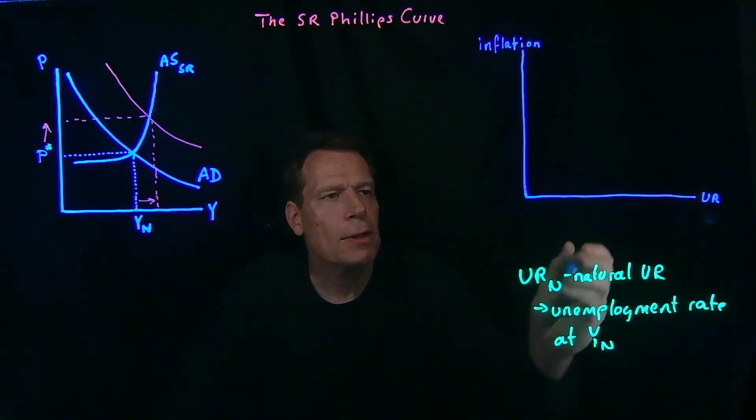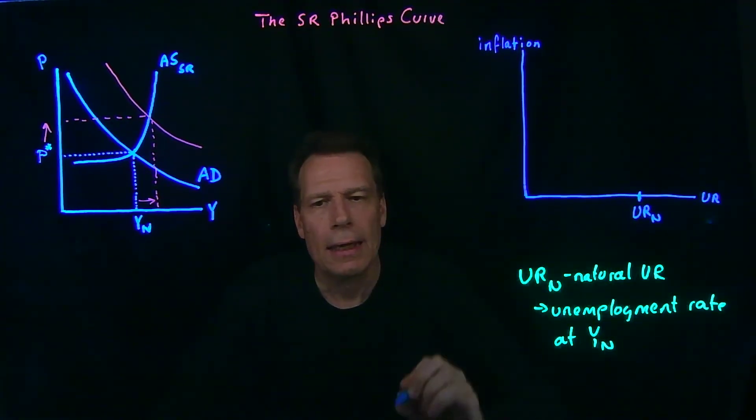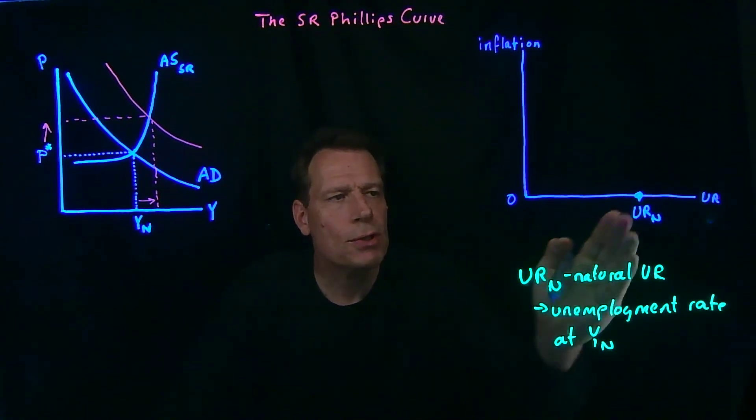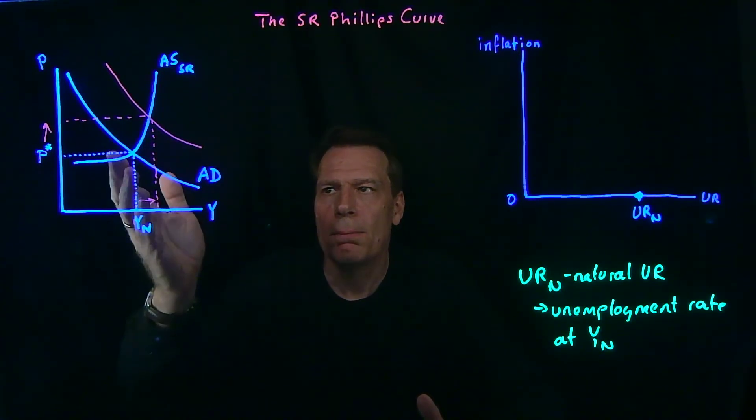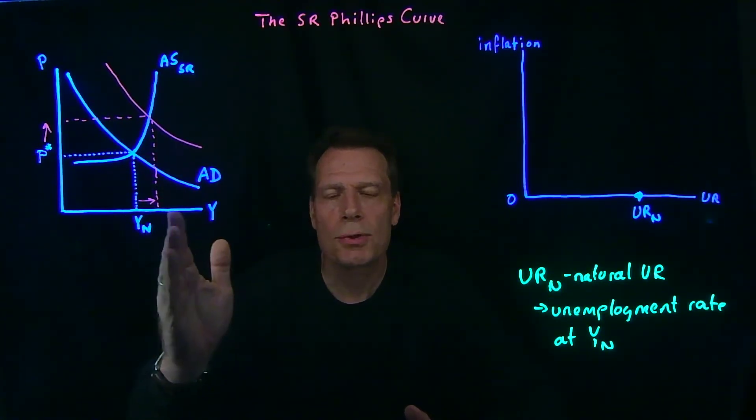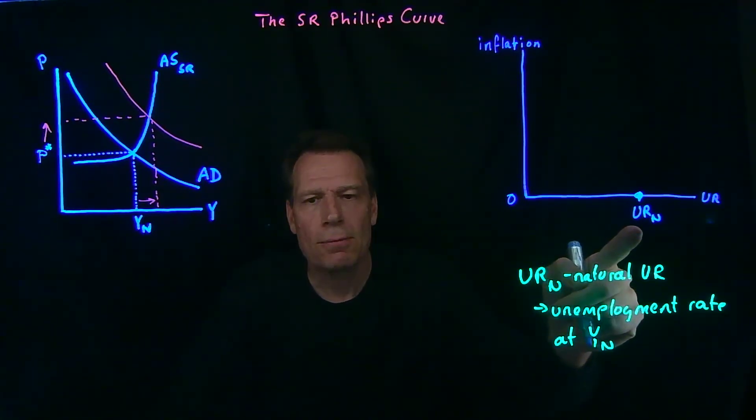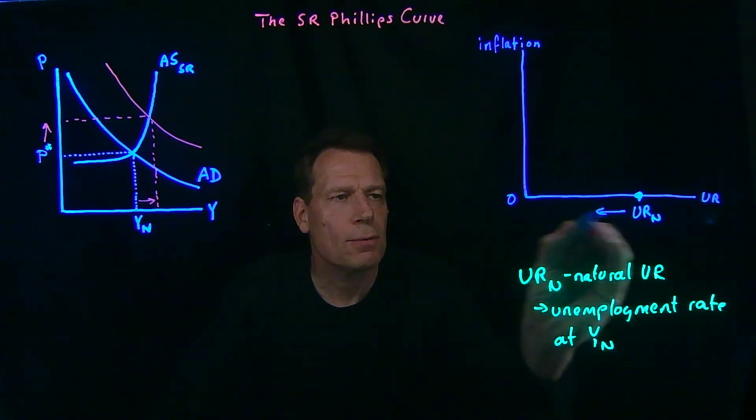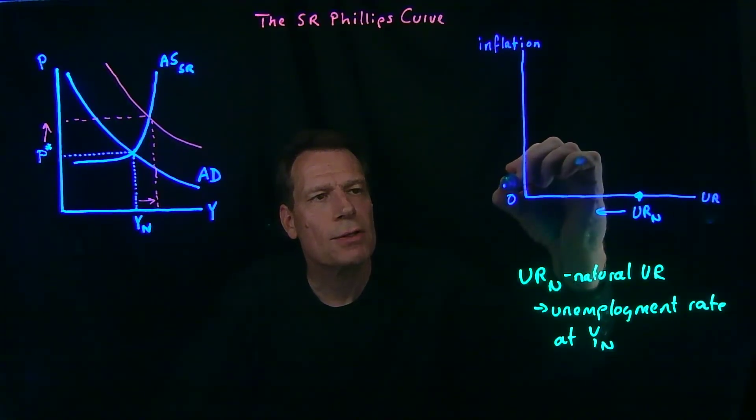So that trade-off that economists identified in the 1960s became known as the Phillips curve. Imagine that we were currently at the natural unemployment rate and at 0% inflation. Now we want to push that unemployment rate down. So we want to pump the economy through expansionary government policy, push aggregate demand out, and produce more. As a result, the unemployment rate is going to drop below the natural level. But at the same time, prices are going to rise. So inflation is going to rise.